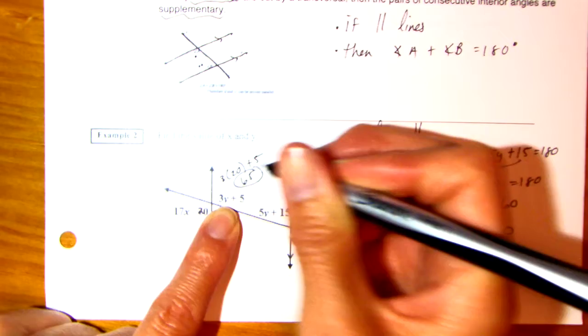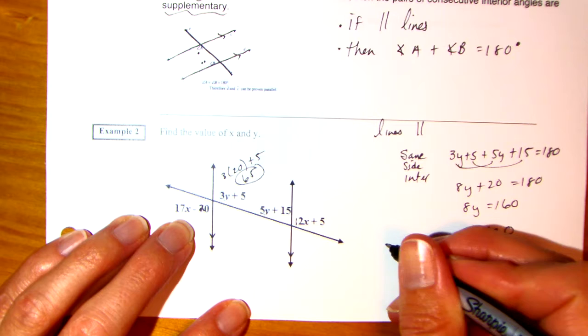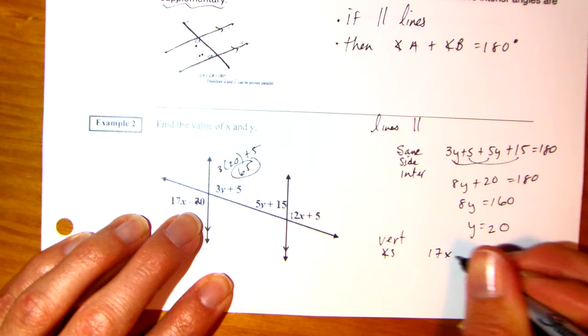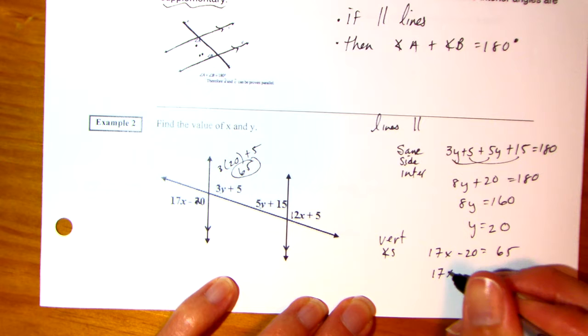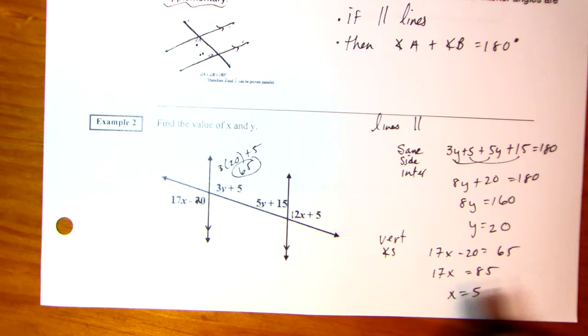So, if I know Y is 20, I'm going to substitute that in. Then, 3 times 20 plus 5 is 65. Now, because these are vertical angles, I know this is 65 also. So, your vertical angles. 17X minus 20 is equal to 65. So, I'm going to add 20 to both sides. Divide by 17. And then also, I'm going to check here.